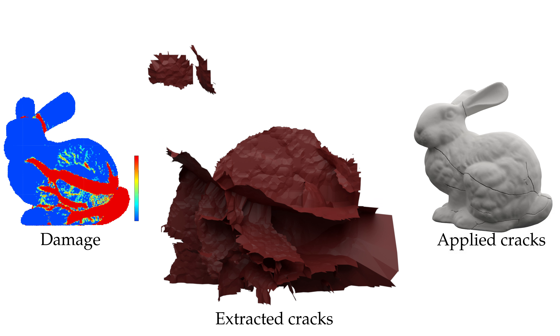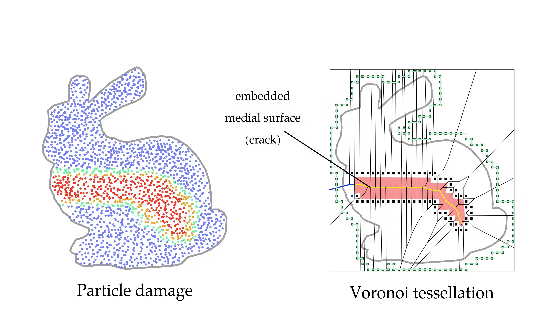Given simulated damage, we represent a crack surface as a medial surface approximation. At a given time step, we first isolate fully damaged particles. We then find the implicit surfaces bounding these particles to create crack volume. Finally, we tessellate these volumes to determine the explicit crack surfaces as a medial surface approximation.